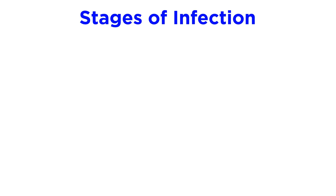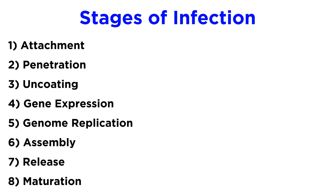Now let's move on to the stages of the cellular viral infection cycle. Typically, in a productive virus-cell interaction, infection happens in the following stages: attachment, penetration, uncoating, gene expression, genome replication, assembly, release, and maturation.